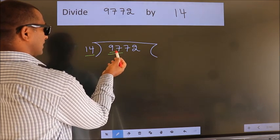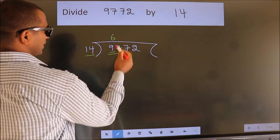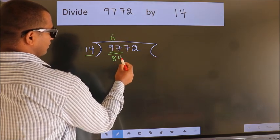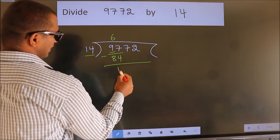A number close to 97 in 14 table is 14 times 6, 84. Now we should subtract. We get 13.